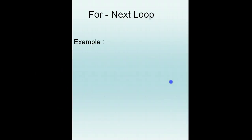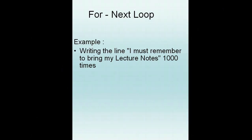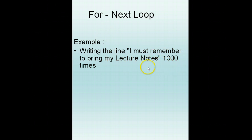Using the for-next loop — for example, you are punished for doing something wrong unfortunately, and you have to write the line 'I must remember to bring my lecture notes' 1000 times. Now, being a smart student, you do not literally write this statement 1000 times, but you want to use programming code to do it.